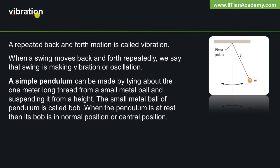Here we will learn what vibration is, what it means, and its properties. A repeated back-and-forth motion is called vibration. Back and forth means going forward and coming back. When a swing moves back and forth repeatedly, we say that the swing is making vibration or oscillation. A simple pendulum can be made by tying about a 1-meter-long thread from a small metal ball and suspending it from a height. The small metal ball of the pendulum is called the bob. When the pendulum is at rest, its bob is in the normal or central position.